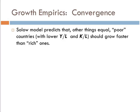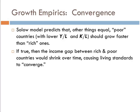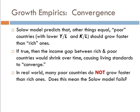If this were true, the income gap between rich and poor countries would shrink over time, causing standards of living to converge — all the poor countries in the world would eventually catch up to the United States and everybody would eventually live at the same standard of living. Unfortunately, it doesn't quite work that way. In the real world, we have economies that are permanently underdeveloped.